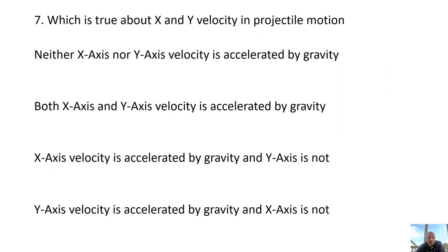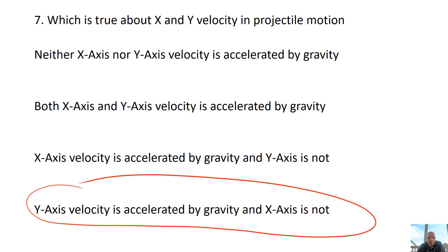Conceptual: what's true about x-axis and y-axis velocity in projectile motion? Only the y-axis is accelerated by gravity at 10 meters per second squared downward. There's nothing accelerating or changing the x-axis velocity — the x-axis stays in constant motion.